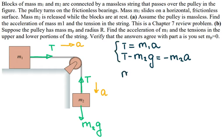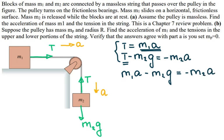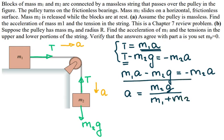To solve for acceleration, replace the tension with M1a. So you have M1a minus M2g equals negative M2a. Moving all the a terms to one side and M2g to the other, you get acceleration equals M2g divided by M1 plus M2. That is your result when the mass of the pulley is not given.